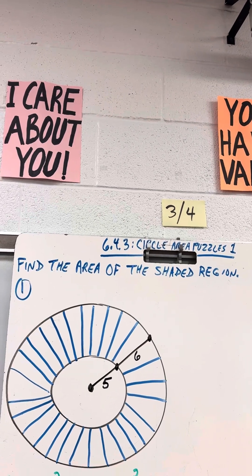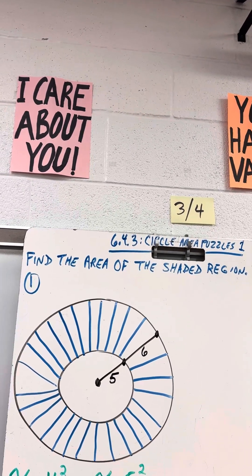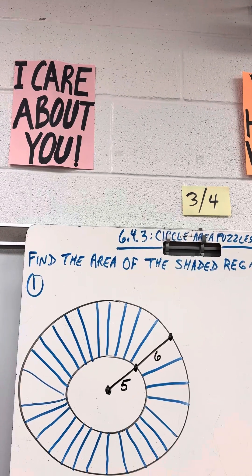There's two types of problems. This type, first, you've got to take the big circle and then subtract the little circle.